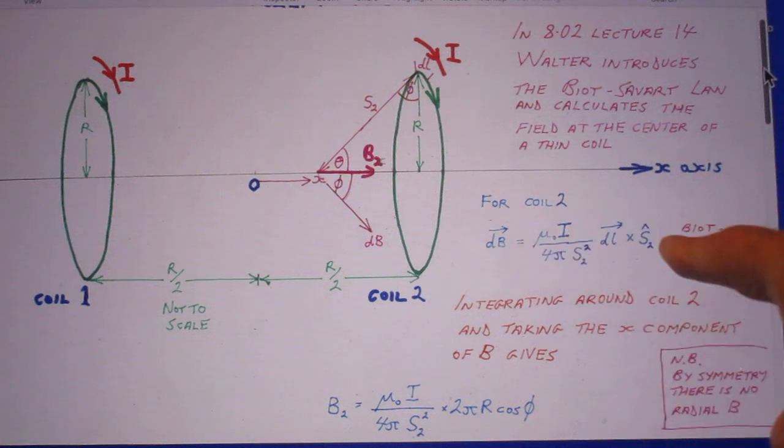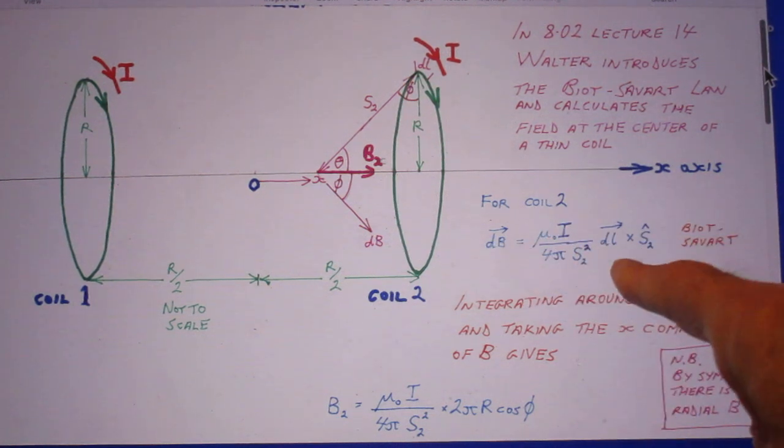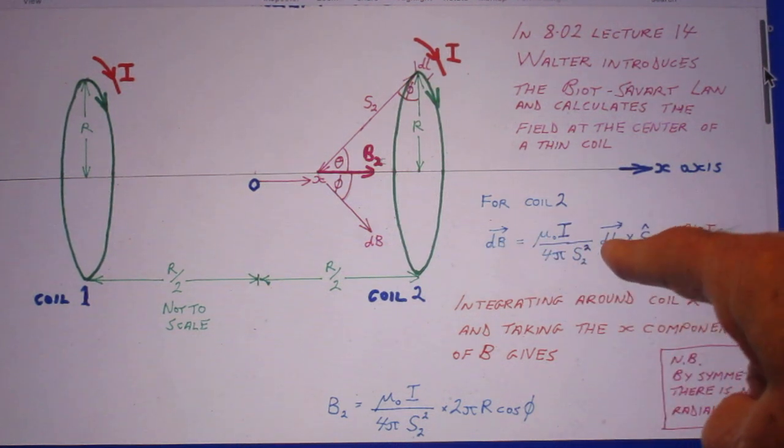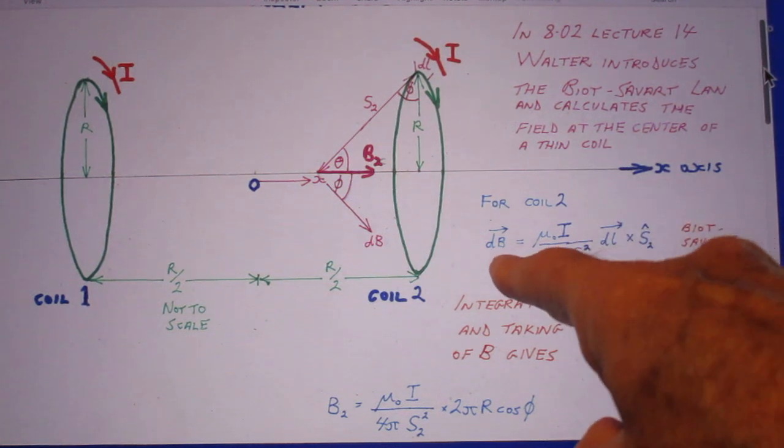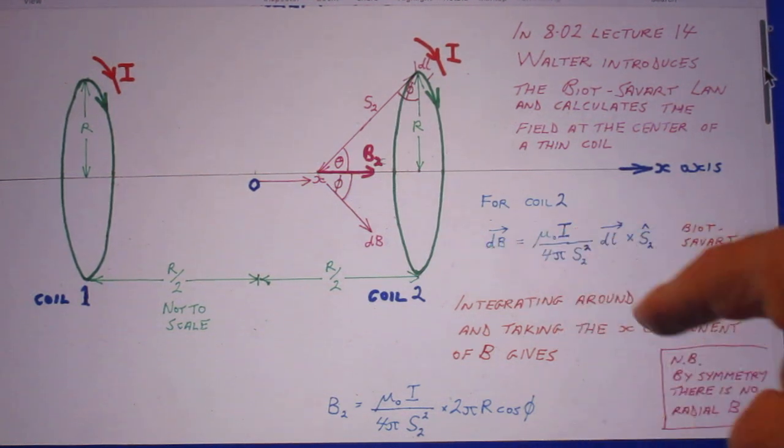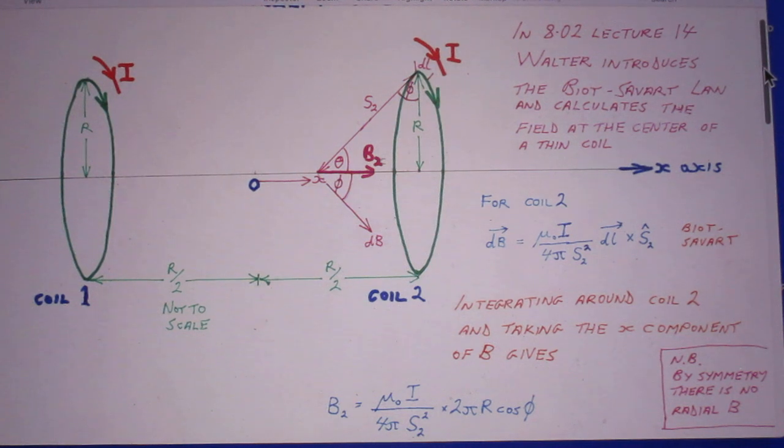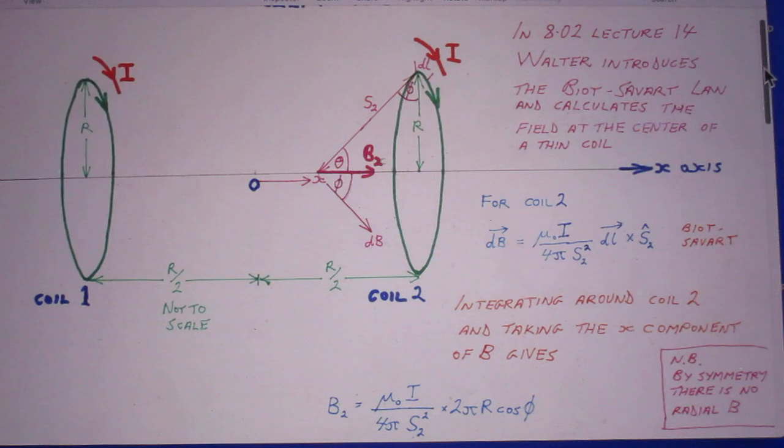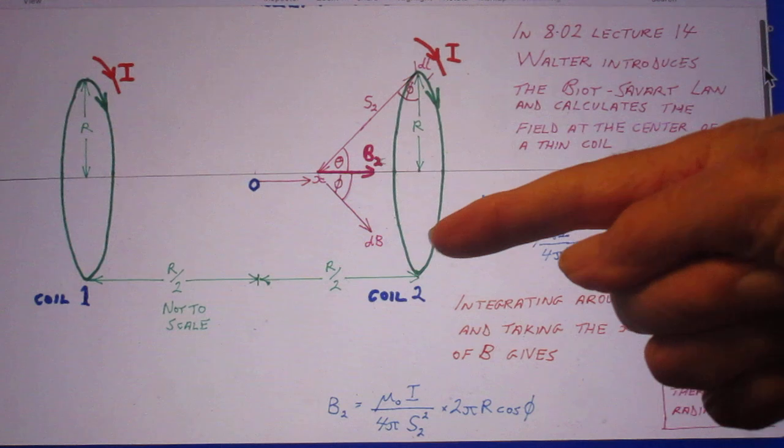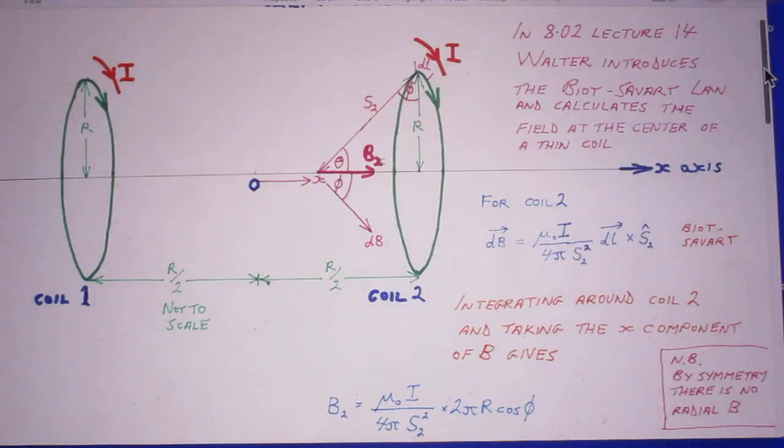However, this is Biot-Savart and it has here the cross product between two vectors, and that gives him then the direction of dB. Since he concludes the dB is in this direction, I was therefore able to conclude that dl is into the paper. Therefore if I look in this direction, the current is going clockwise and also there.